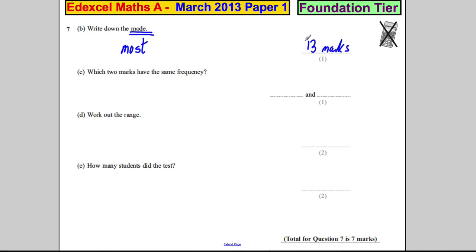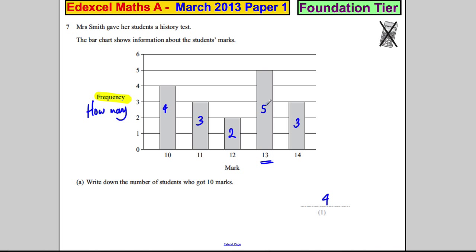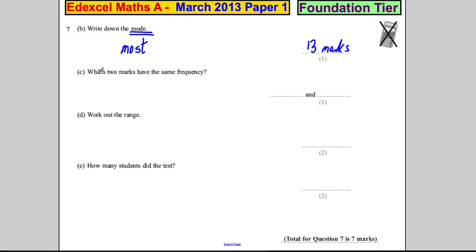Now it's very important here. Don't make a mistake. Don't say that the mode is five. That's how many times it happened. The mode is the thing that happened the most. So it's very important you remember it's 13 is the answer, not five. An easy mistake to make.